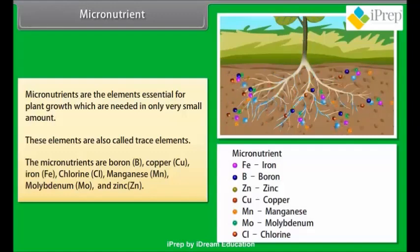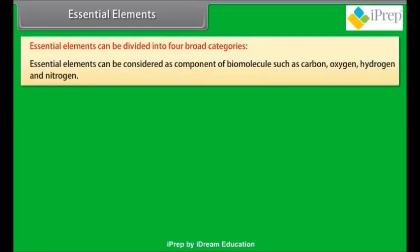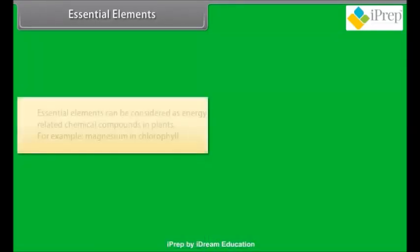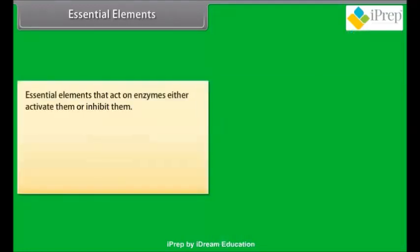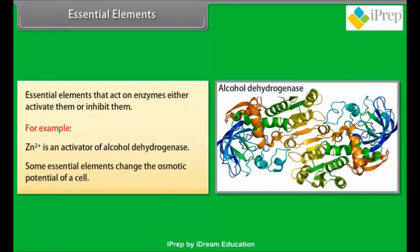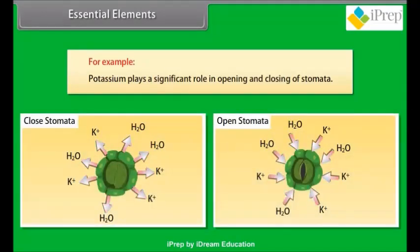Essential elements can be divided into four broad categories. They can be considered as components of biomolecules such as carbon, oxygen, hydrogen, and nitrogen. They can be energy-related chemical compounds in plants — for example, magnesium in chlorophyll. Some essential elements act on enzymes, either activating or inhibiting them — for example, Zn²⁺ is an activator of alcohol dehydrogenase. Some essential elements change the osmotic potential of a cell — for example, potassium plays a significant role in the opening and closing of stomata.